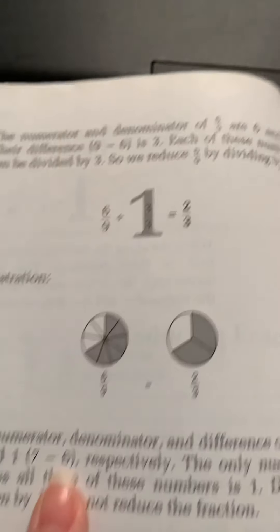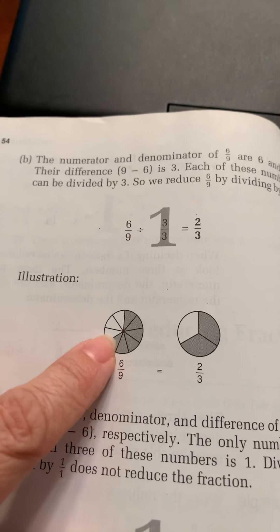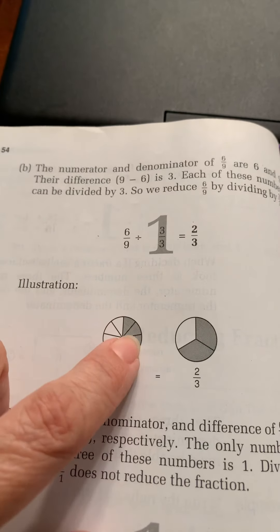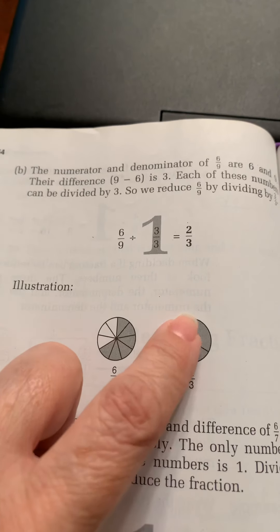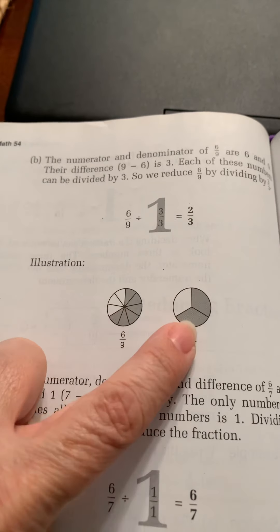So it gets that fraction down smaller, but it means the same thing. Each of these ninths are the same as one-third. Like, three of the ninths equal one-third.